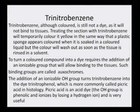The addition of an ionizable OH group turns trinitrobenzene into the dye trinitrophenol, which is more commonly called picric acid and is used in histology. Picric acid is an acid dye. The OH group is phenolic and ionizes by losing a hydrogen ion and is very useful. If picric acid falls on the skin, it stains the skin dark yellow — that would not have happened with trinitrobenzene, because trinitrobenzene does not have this ionizable oxochrome group. It needed this extra OH, and because of it, the categorization to dye took place.